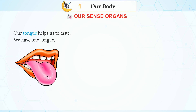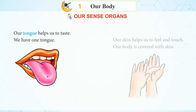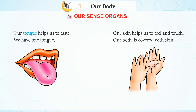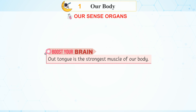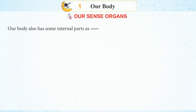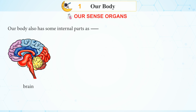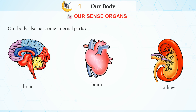Our tongue helps us to taste — we have one tongue. Our skin helps us to feel and touch, and our body is covered with skin. Our body also has some internal parts such as the brain, heart, and kidney.